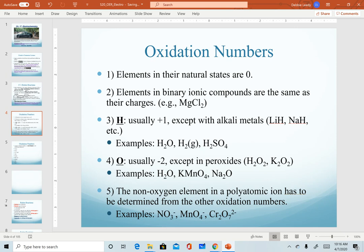So here's the quick list of the rules we use for oxidation numbers. The first rule is often the most forgotten. Any element in its naturally occurring state is going to have an oxidation number of zero. It hasn't gained or lost any electrons yet, and so it has a number of zero.